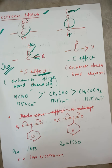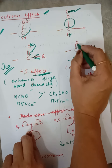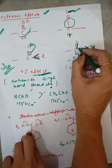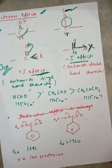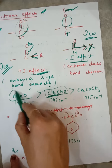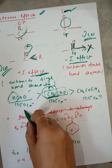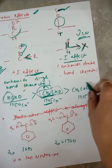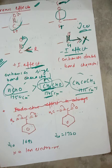So groups with minus-I effect enhance double bond character of carbonyl, increasing carbonyl frequency. For example, formaldehyde at 1750 cm⁻¹: when we attach a methyl group to get acetaldehyde, methyl is an electron-donating group that enhances single bond character, so frequency decreases from 1750 to 1745. For acetone with two methyl groups, frequency decreases further to 1715. Similarly, the mesomeric or resonance effect works in the same way — electron-withdrawing groups enhance double bond character and electron-releasing groups enhance single bond character.